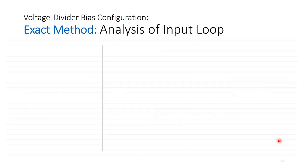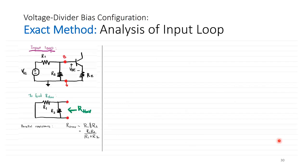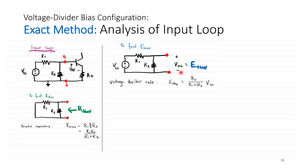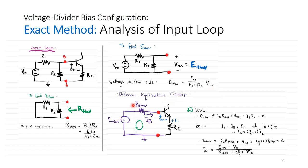We redraw the input loop with EThevenin and RThevenin. Using RThevenin as the parallel combination of R1 and R2, and EThevenin from the voltage divider rule, we perform KVL around the loop: negative EThevenin plus IB·RThevenin plus VBE plus IE·RE equals zero. This gives us IB equals EThevenin minus VBE, divided by RThevenin plus (beta+1)·RE — the same form as before, but with EThevenin instead of VCC.